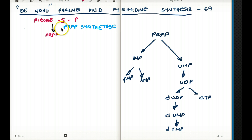From PRPP, we make a substance called 5-phosphoribosylamine. And we make 5-phosphoribosylamine from PRPP using the enzyme PRPP amidotransferase.